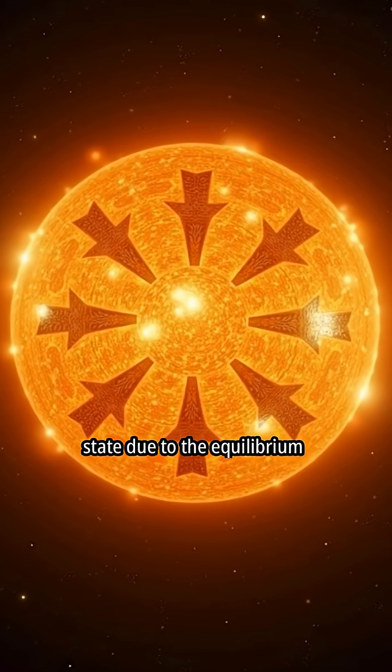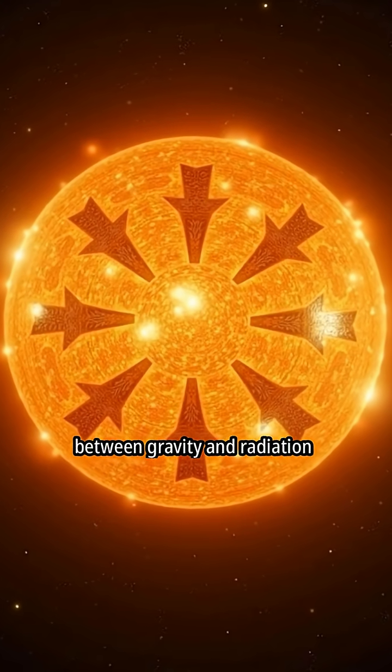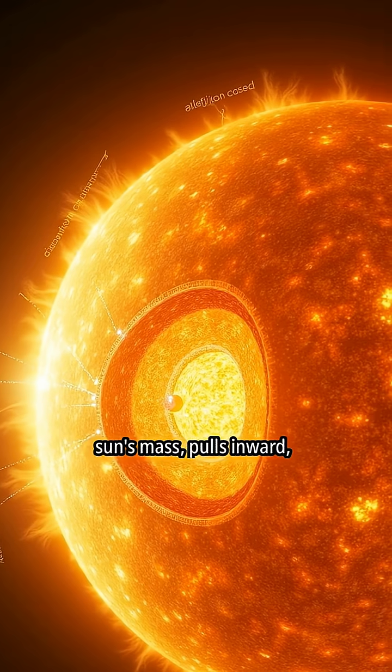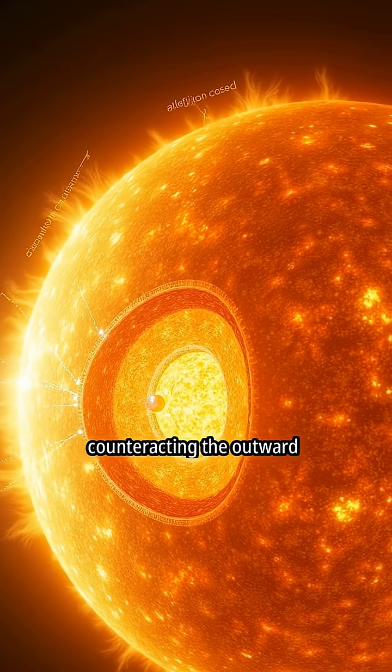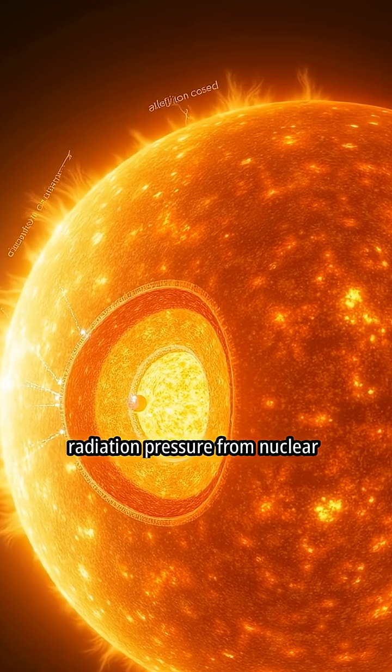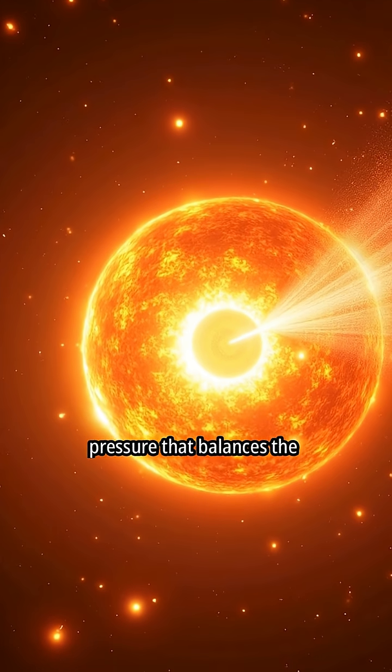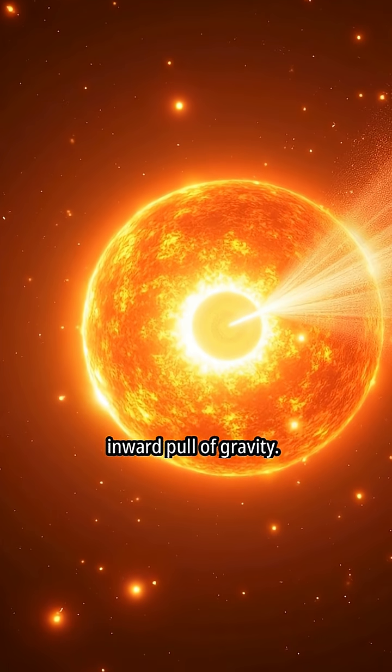The sun maintains a stable state due to the equilibrium between gravity and radiation pressure. Gravity, resulting from the sun's mass, pulls inward, counteracting the outward radiation pressure from nuclear fusion. Nuclear fusion releases energy, creating outward radiation pressure that balances the inward pull of gravity.